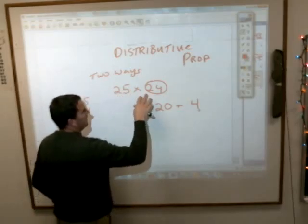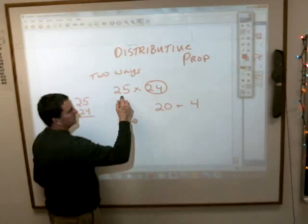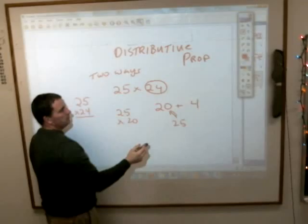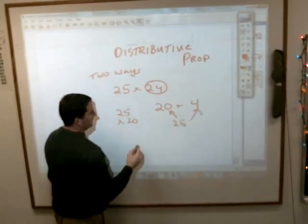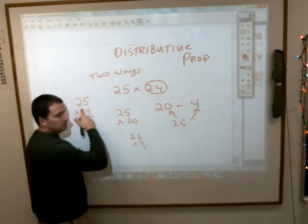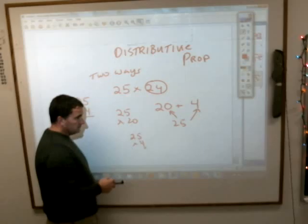You can take 25 and multiply it by 20, because you distribute it. You take 25 times this, and to that, if you add what 25 times 4 is, you're going to get the same answer as if you did 25 times 24 as one big thing.